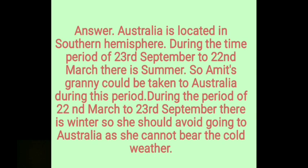Answer: Australia is located in the Southern Hemisphere. During the time period of 23rd September to 22nd March, there is summer. So, Amit's granny could be taken to Australia during this period. During the period of 22nd March to 23rd September, there is winter. So, she should avoid going to Australia as she cannot bear the cold weather.